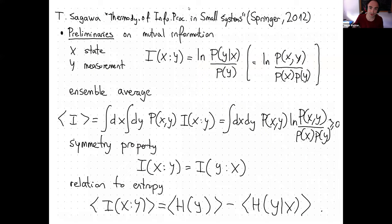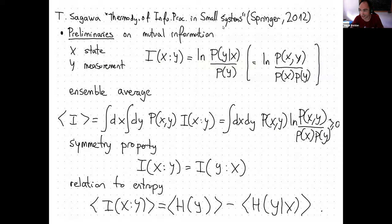Now I'm going to something a bit more detailed, which is the theory of thermodynamics of information processing in small systems. I'm following a very nice piece of work — the PhD thesis of Takahito Sagawa, called Thermodynamics of Information Processing in Small Systems. Sagawa was one of the two scientists who generalized the second law to systems with information. The new second law has information as a source of entropy production.